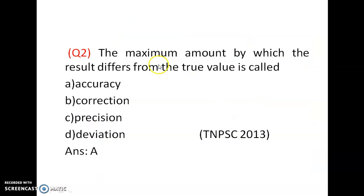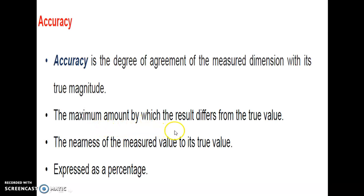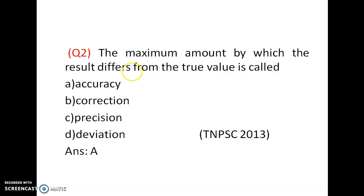Second question: The maximum amount by which the result differs from the true value is called accuracy. Accuracy is a degree of agreement of the measured dimension with its true magnitude — the measured value should be in agreement with the true value, and it is also the maximum amount by which the result differs from the true value. So the answer is A.